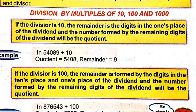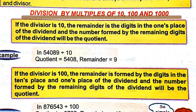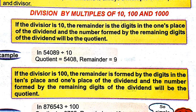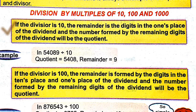Next, division by multiples of 10, 100, and 1000. If the divisor is 10, the remainder is the digit in the ones place of the dividend, and the number formed by the remaining digits of the dividend will be the quotient.